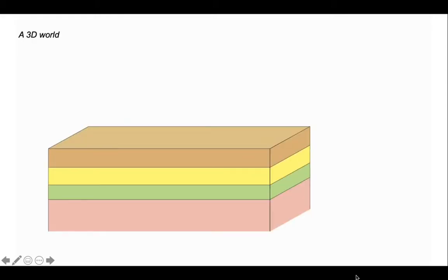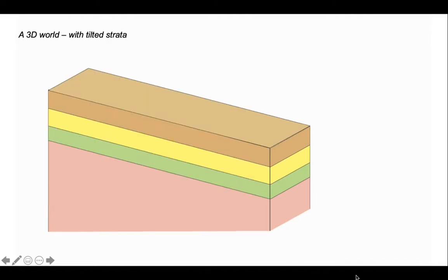Let's think about this in three dimensions. Here we have our layers of rock, one on top of the other, and now let's tilt it. We have layers of strata inclined down to the right. This orientation we record with a strike and a dip. The strike is the horizontal direction measured as a bearing on the plane of the layering, and the dip is the maximum inclination, which is perpendicular to the direction of strike.